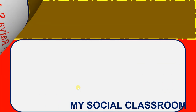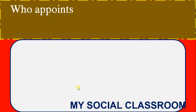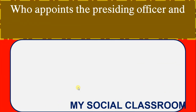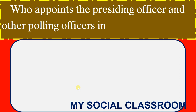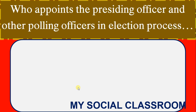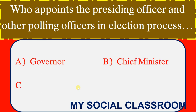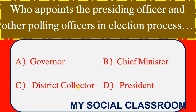Who appoints the Presiding Officer and other polling officers in the election process? Options: Governor, Chief Minister, District Collector, President. Correct Answer: District Collector.